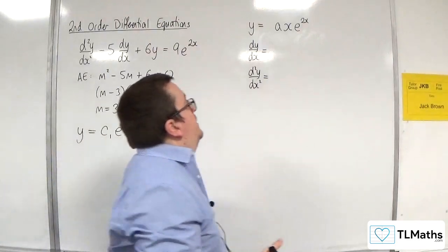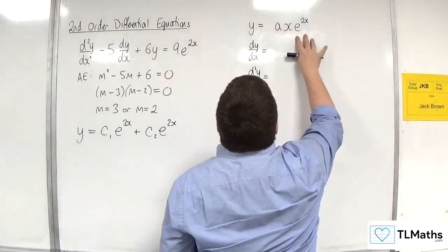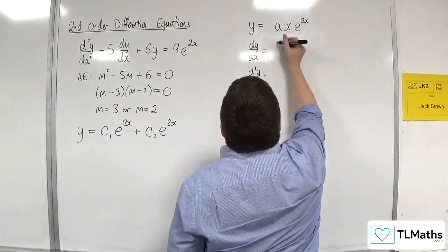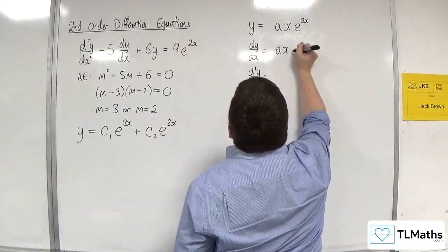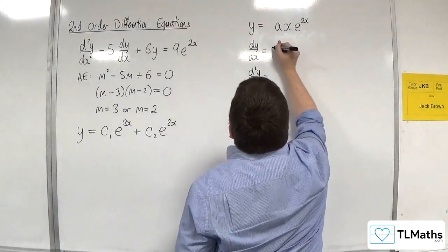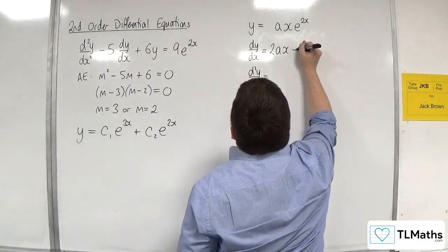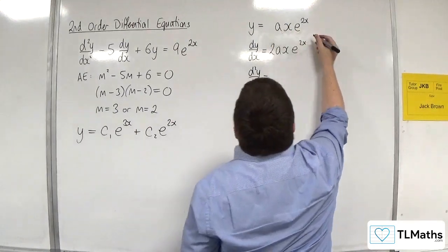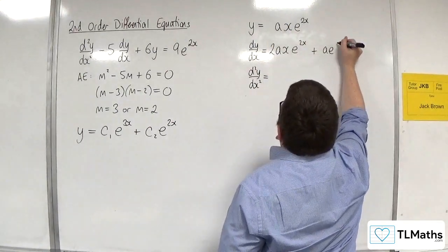So when I differentiate, I'm going to have to use the product rule. Ax times e to the 2x. So the first times the derivative of the second - so 2axe to the 2x - plus the second times the derivative of the first, so that's plus ae to the 2x.